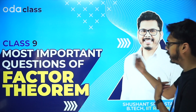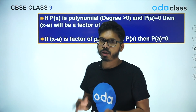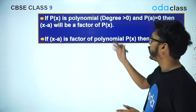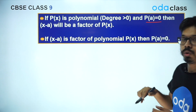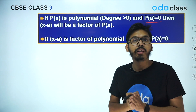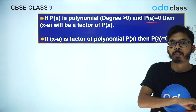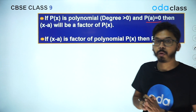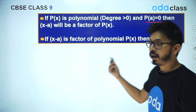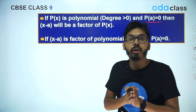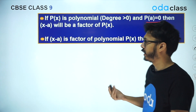Let's see the theorem first and then we're going to talk about questions. The theorem statement can be expressed in two ways. The first statement is: if P(x) is a polynomial whose degree is greater than zero, and P(a) = 0, then (x - a) will be a factor of P(x). The same statement retransformed: if (x - a) is a factor of polynomial P(x), then P(a) will be zero. These are the two statements of the Factor Theorem.